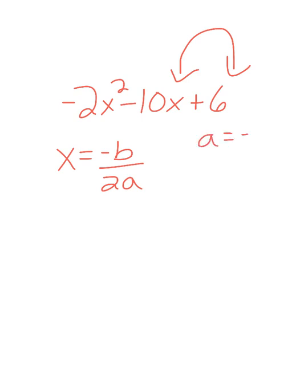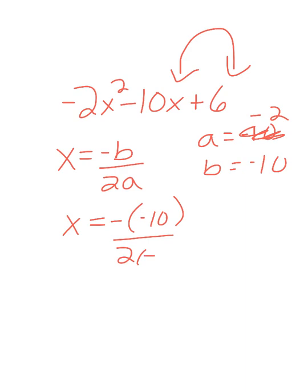I have A equals negative 2, and B equals negative 10. I'm going to substitute those in. So I have the opposite of negative 10 over 2 times negative 2. I have 10 divided by negative 4, which is negative 2 and a half.